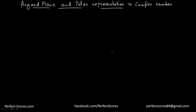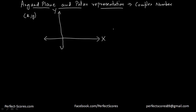Let's suppose we have an ordered pair x comma y. We have an Argand plane which represents a complex number. This is our plane — this is the x-axis and this is the y-axis, and x comma y is any point on this Argand plane. This is also the negative y-axis and negative x-axis. The x-axis is called the real axis and the y-axis is called the imaginary axis.